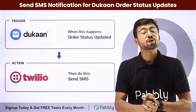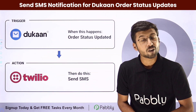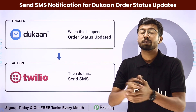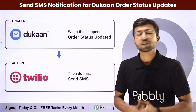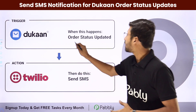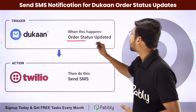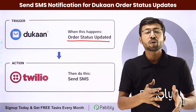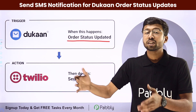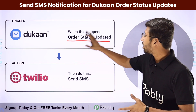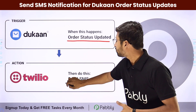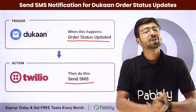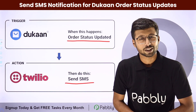You can completely automate this process of sending order updates as SMS notifications. In this automation, the trigger will be getting a new order status updated in our Dukan store. Whenever we update an order in the Dukan store, this automation will be triggered, and the action will be sending an SMS notification to the customer who placed that order.